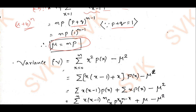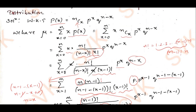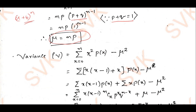Now, after finding the mean, let us move on to finding the variance. The variance is given by the formula: σ² = summation from x=0 to n of x²·p(x) − μ². This is the standard form of expressing variance.